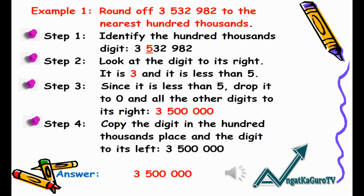Example 1: Round off 3,532,982 to the nearest hundred thousands. Step 1: Identify the hundred thousands digit — in this case it's 5. Step 2: Look at the digit to its right — it is 3, and it is less than five. Step 3: Since it is less than five, drop it to zero and all the other digits to its right.